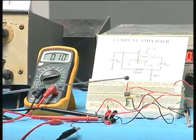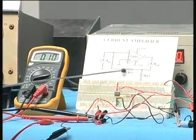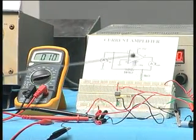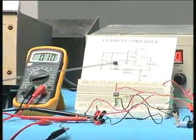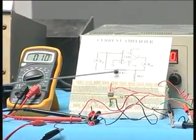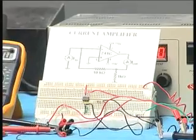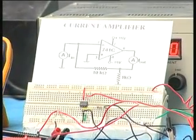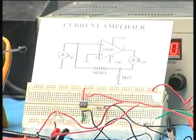And because the gain is 11, 1 plus R2 by R1, R2 is 10k, R1 is 1k as you can see in the circuit on the top. So 1 plus R2 by R1 is 11. 11 times 10 microamperes is 110 microamperes.